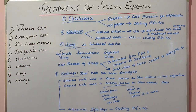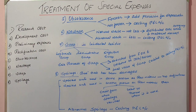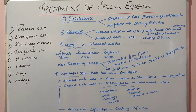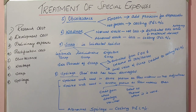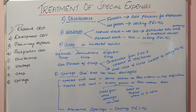Obsolescence is the decrease in value of an asset, resulting in a loss. The main reasons for obsolescence are changes in methods of production, changes in technology, and new innovations — causing existing machinery to become obsolete and requiring replacement with new machinery, which results in a loss for the organization.